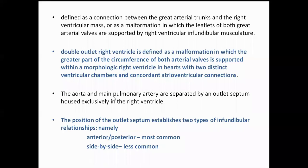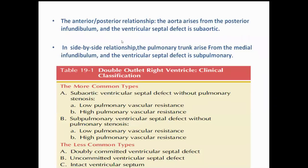The position of the outlet establishes two types of intraventricular relationships. One is anterior-posterior, which is considered to be the most common, and the second one is side by side, which is less common. In the anterior-posterior relationship, the aorta rises from the posterior infundibulum and the ventricular effect is sub-aortic.